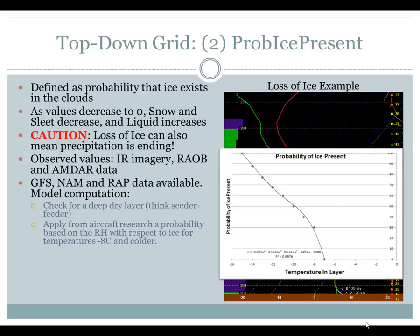Looking at the curve, when you get temperatures at minus 8°C, you are looking at a 30% probability of ice present, assuming it is saturated. And you go all the way up to minus 15 and now you are at 100%. Again, this comes from that aircraft research. For further details, reference the probability weather type documentation.